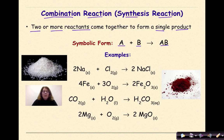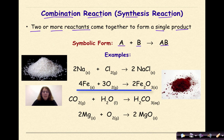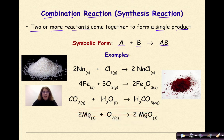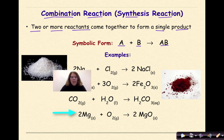Here are some examples. We have sodium plus chlorine gas gives us sodium chloride. Iron plus oxygen gas gives us iron oxide. Carbon dioxide plus water will give us carbonic acid. Magnesium plus oxygen will give us magnesium oxide.